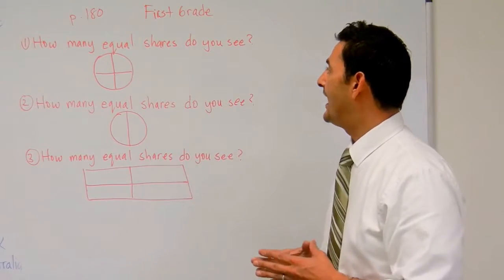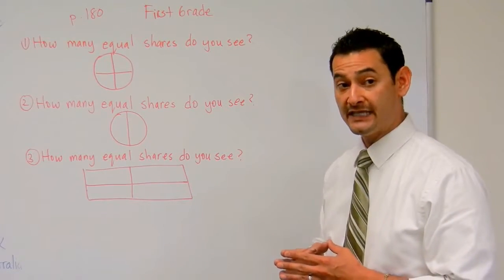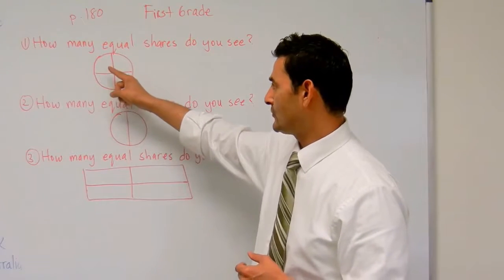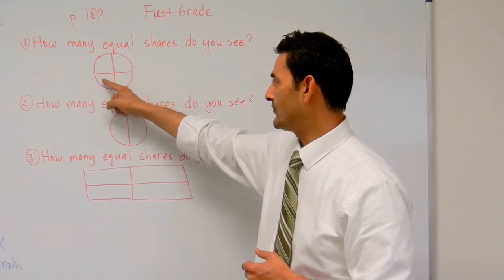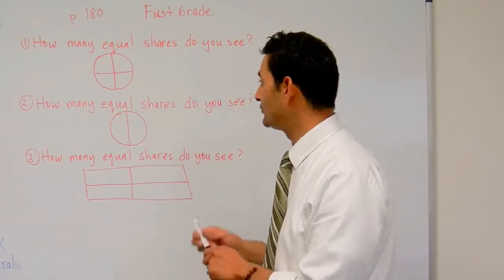So number one says, how many equal shares do you see? So we're just going to count them. So in this circle, we have one, two, three, we have four equal shares.